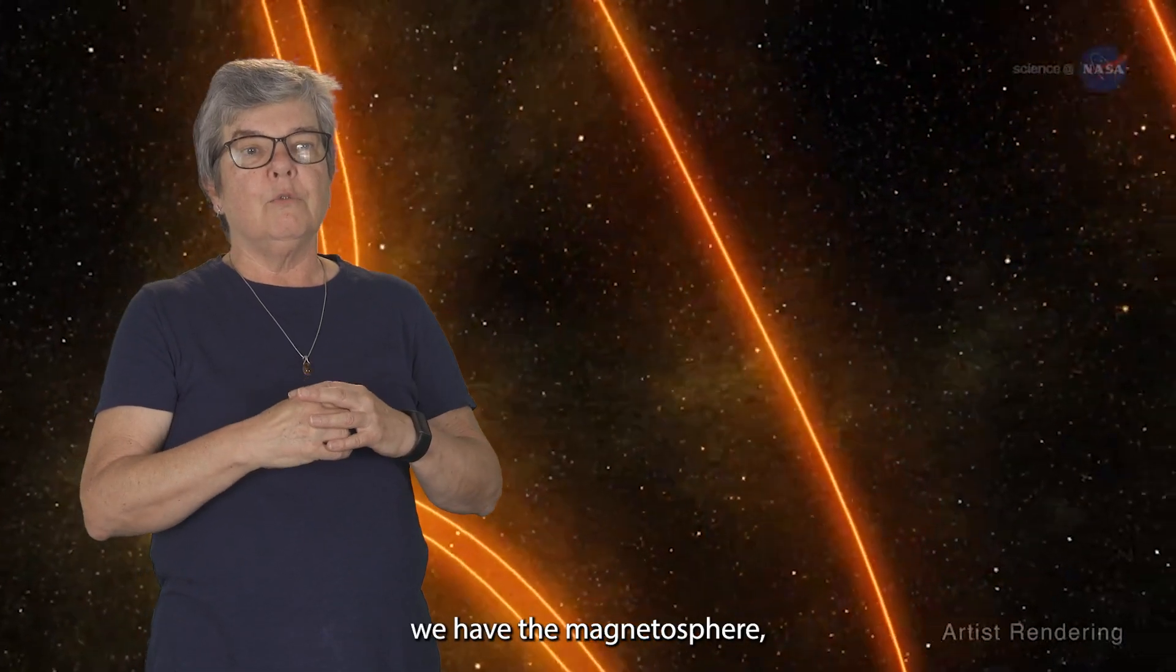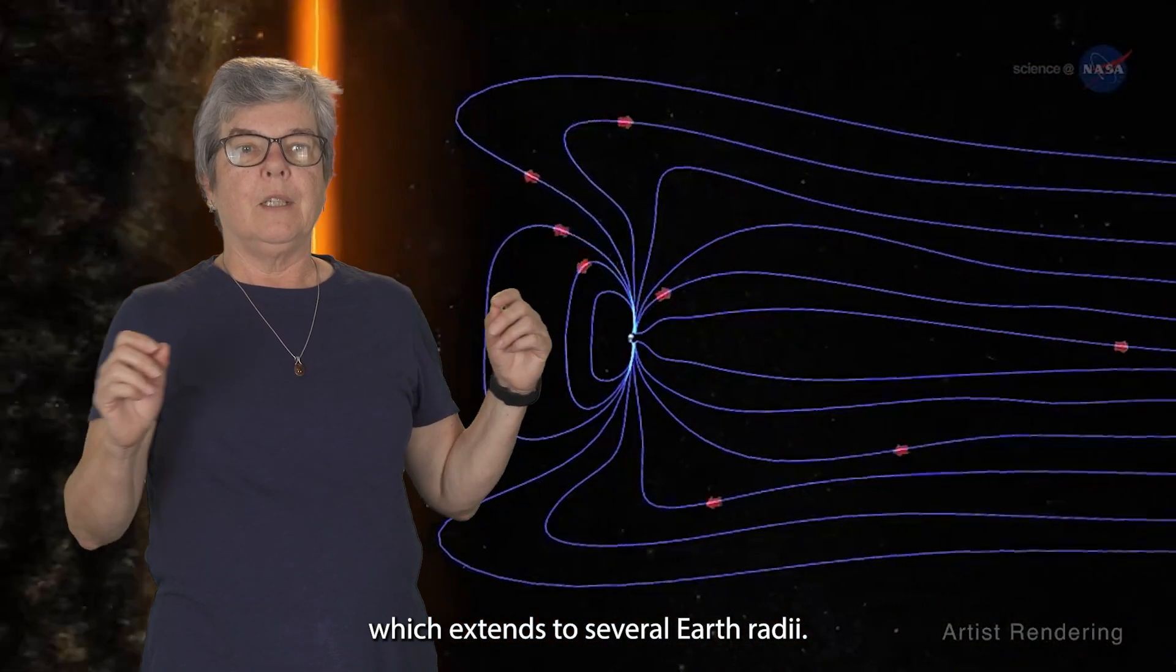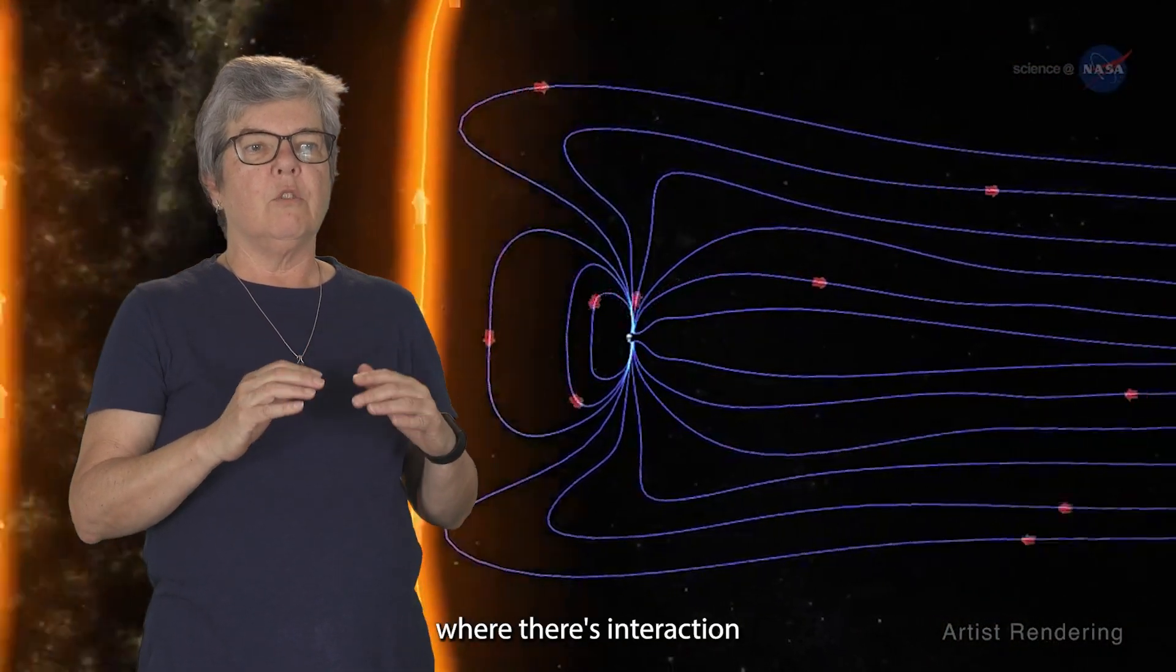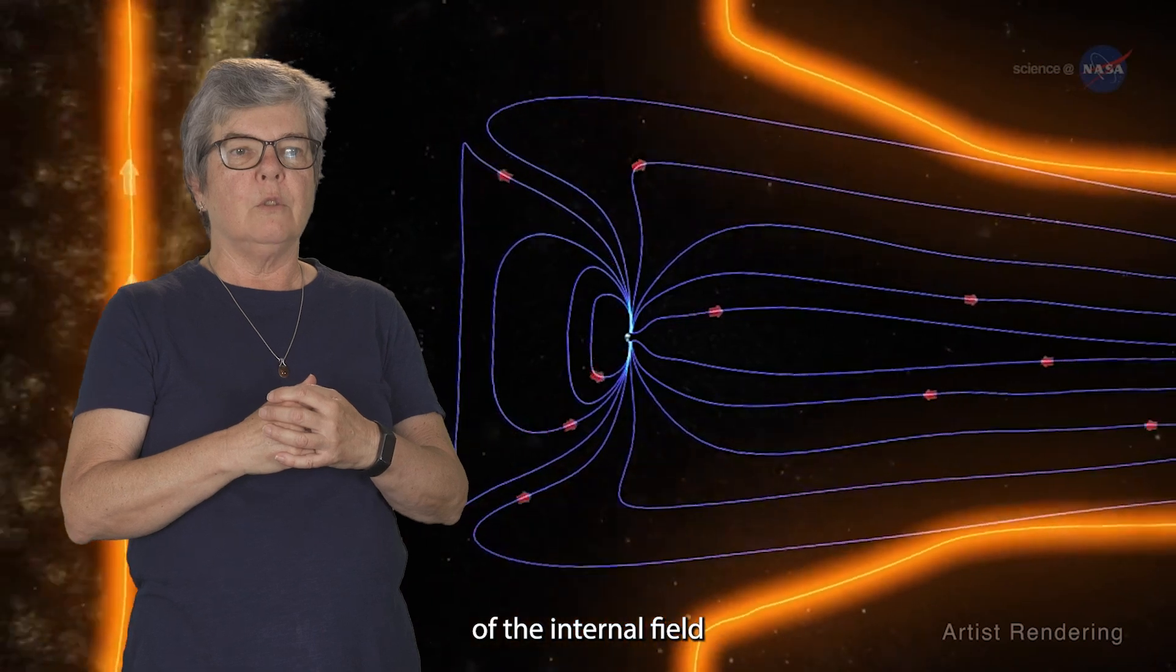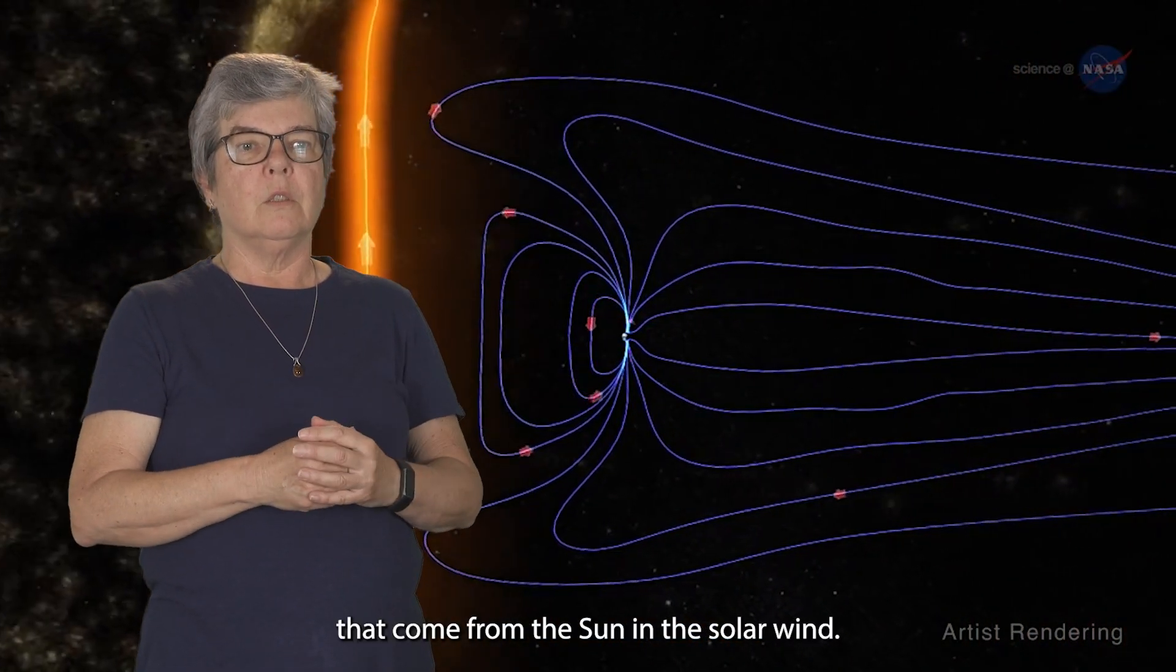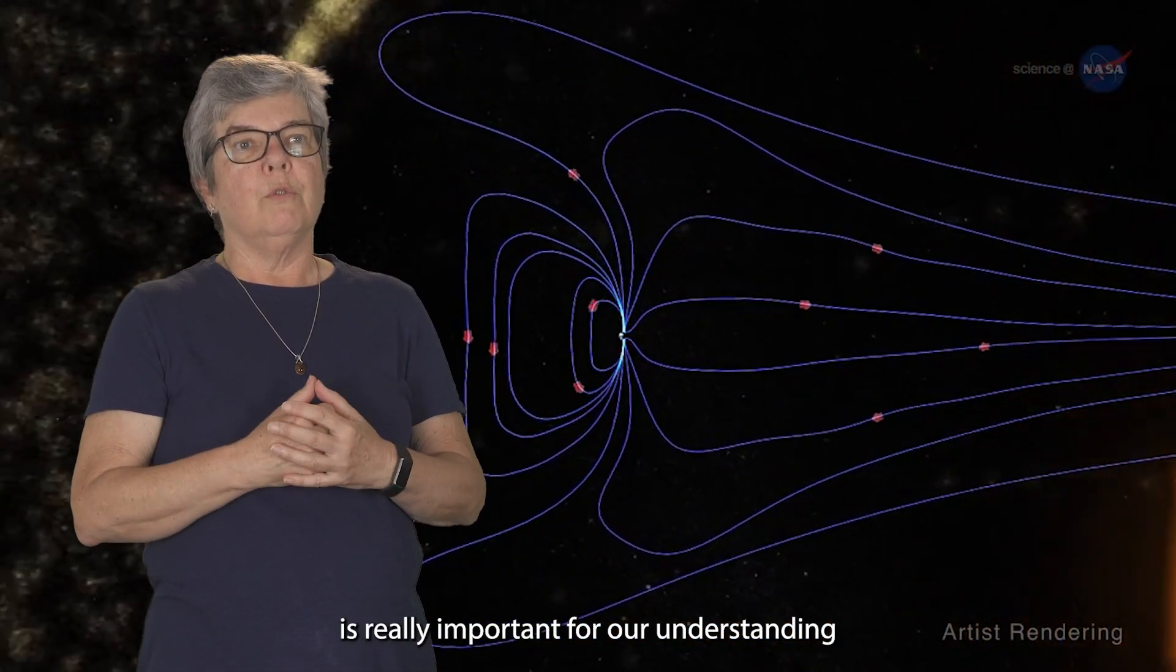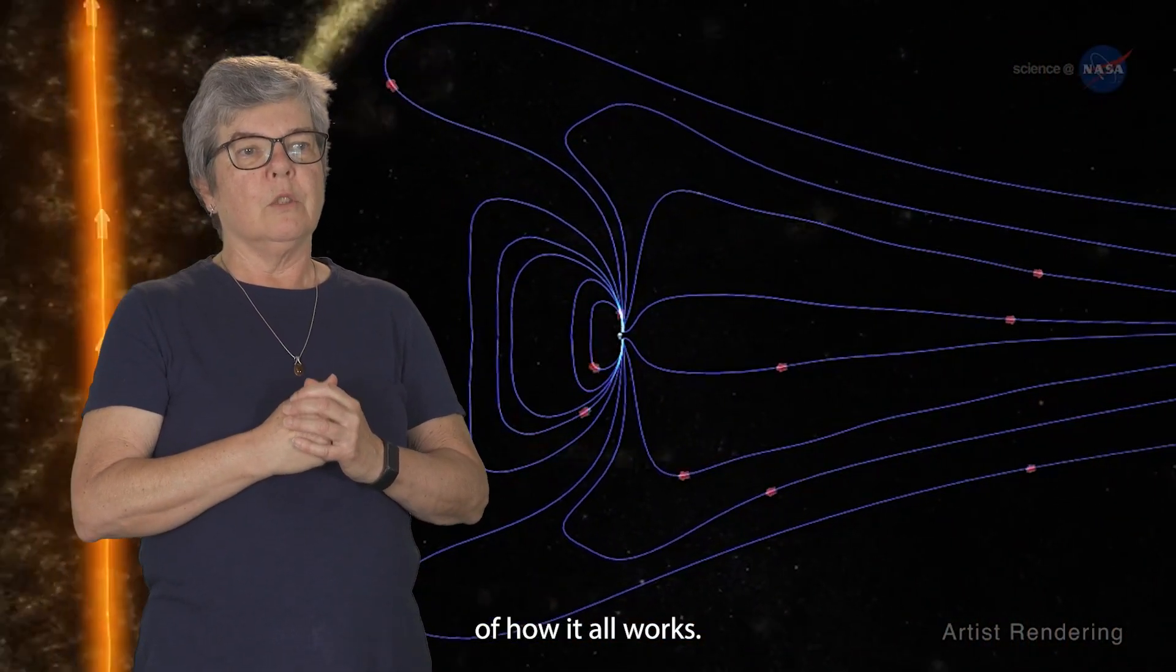Further out, we have the magnetosphere, which extends to several Earth radii. And this is the region where there's interaction of the internal field with charged particles that come from the Sun in the solar wind. Separating the effects of the different sources of the field is really important for our understanding of how it all works.